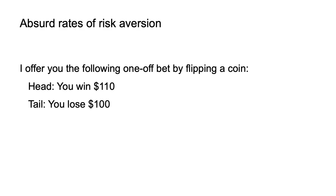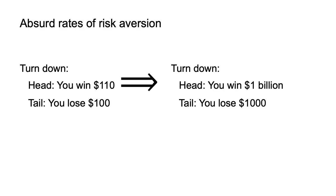Under the axiom of diminishing marginal utility, we could conclude that you rejected it as you are risk-averse. However, the minimum utility function curvature required to reconcile an expected utility maximiser declining bets of this nature when you hold any material level of wealth implies that you would reject immensely favourable bets. Examples in Rabin (2000) and Rabin and Thaler (2001) illustrate this.